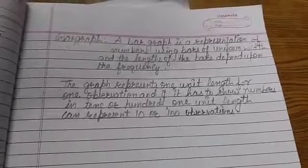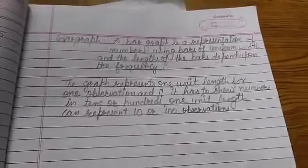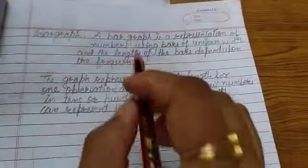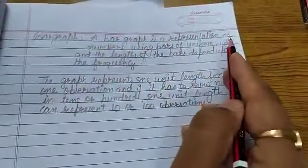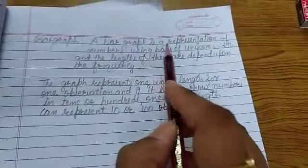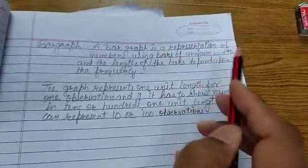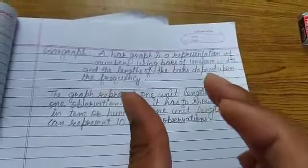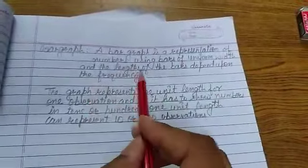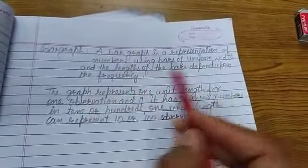Hello students, today we will do bar graph. What is bar graph? A bar graph is a representation of numbers using bars of uniform width. Uniform width means equal width.